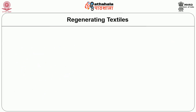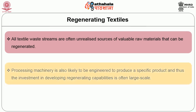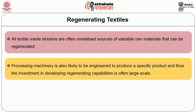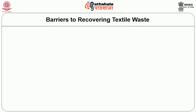All textile streams are often unrealized sources of valuable raw materials that can be regenerated. Processing machinery is likely to be engineered to produce a specific product, so the investment in developing regenerating capabilities is often large scale. Products made by regenerating textile waste include acoustic textiles used for soundproof blocks, insulation, roofing felt, bank stabilization, and pollution control filters.